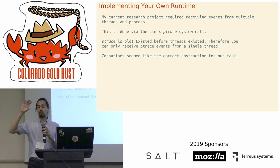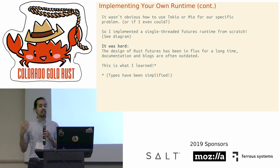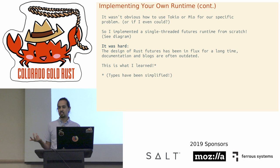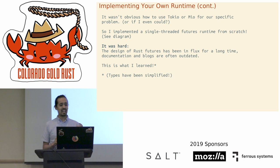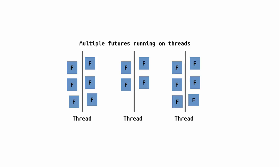I wanted to logically write my code so there's a coroutine or future running per thread or per process, but in reality this all had to map to the same thread of execution. I first tried to pick up Tokio or Mio but wasn't exactly sure how to use it — most examples revolve around network I/O. I ended up going down the rabbit hole, and this is how I implemented a single-threaded future runtime from scratch.